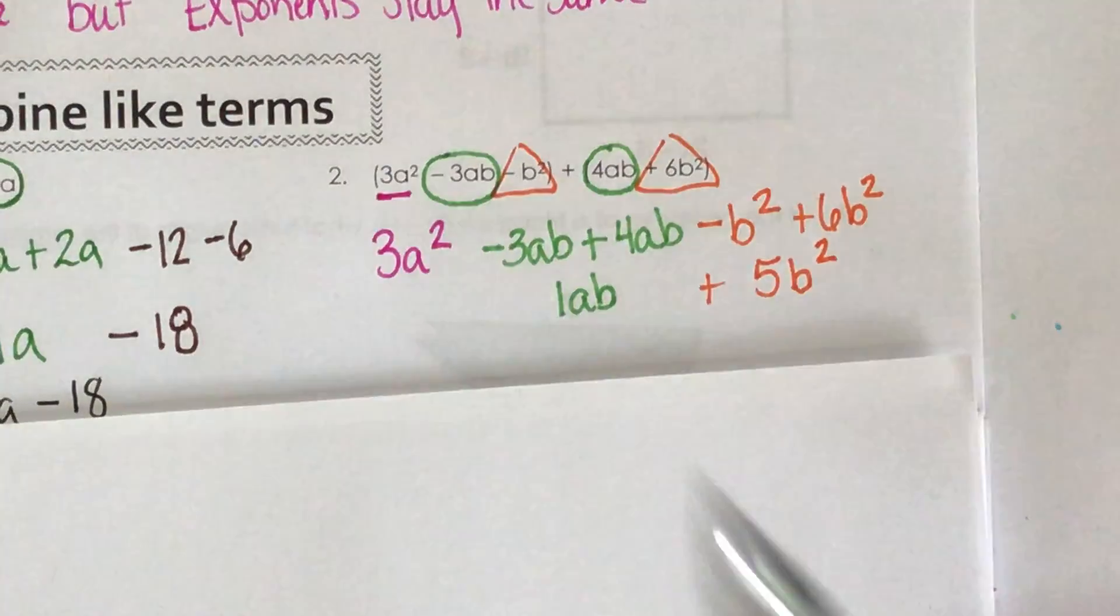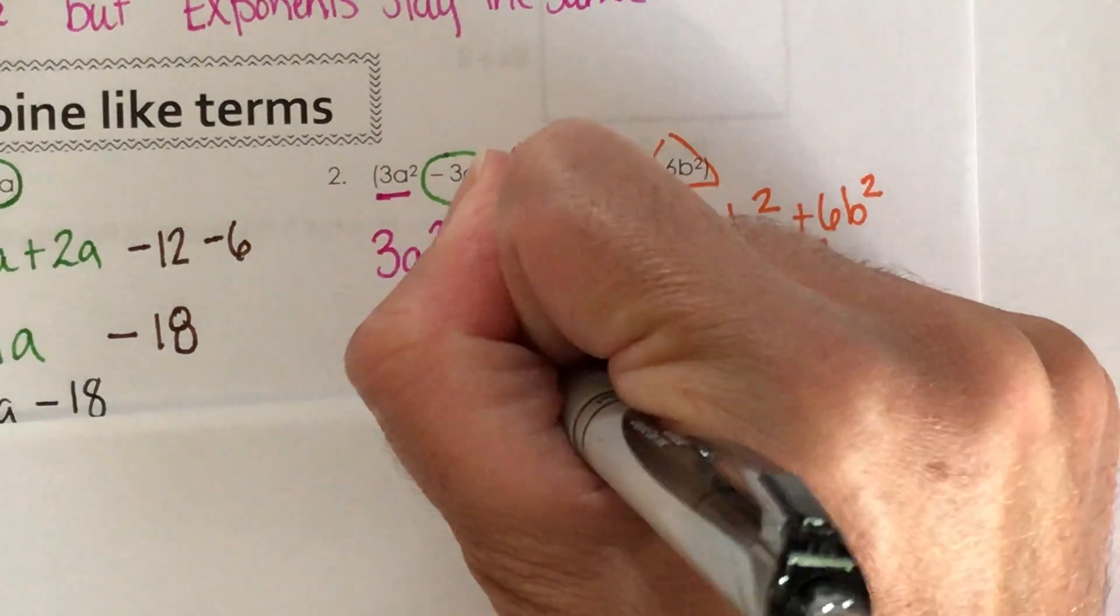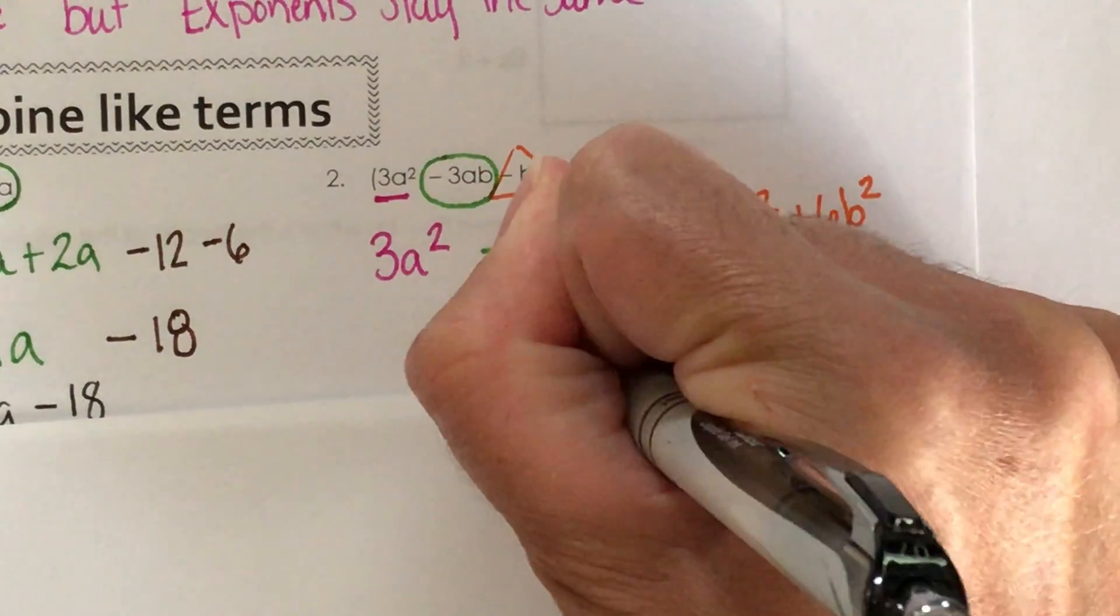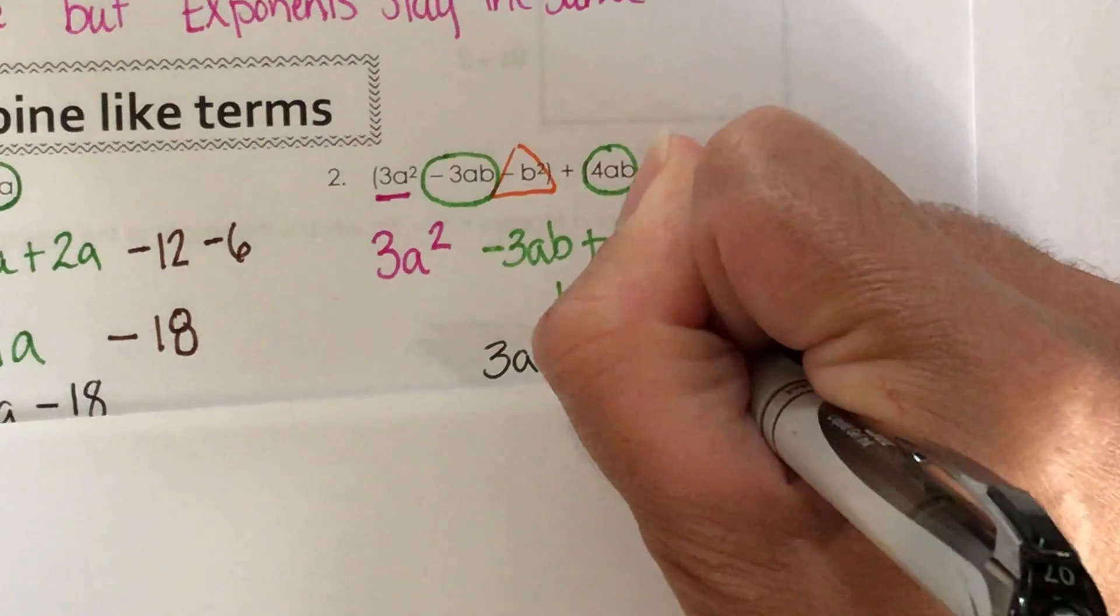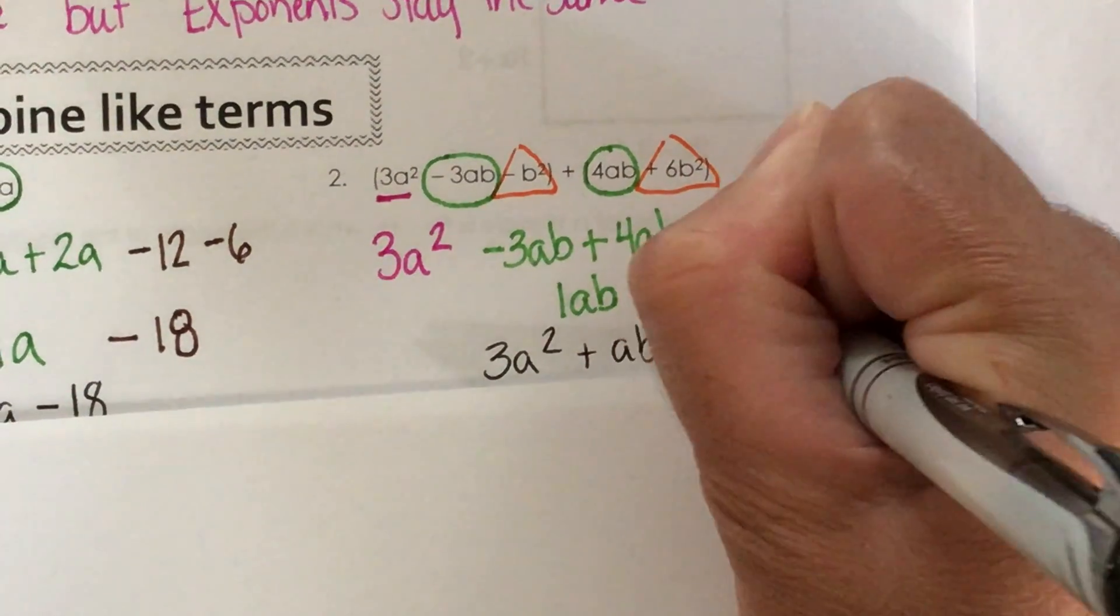So what is my final simplified answer? 3a squared plus ab plus 5b squared.